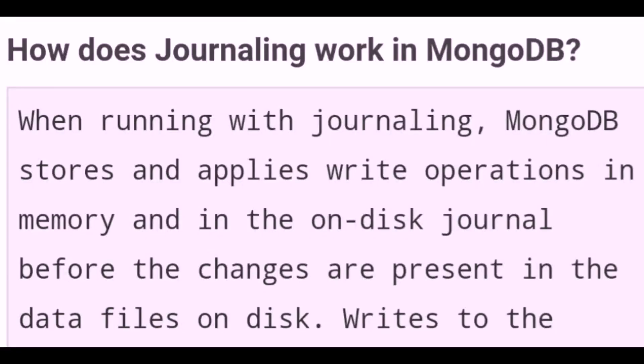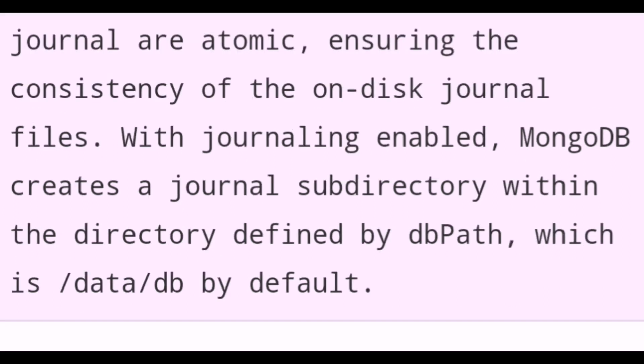How does journaling work in MongoDB? When running with journaling, MongoDB stores and applies write operations in memory and in the on-disk journal before the changes are present in the data files on disk. Writes to the journal are atomic, ensuring the consistency of the on-disk journal files. With journaling enabled, MongoDB creates a journal subdirectory within the directory defined by dbpath, which is /data/db by default.